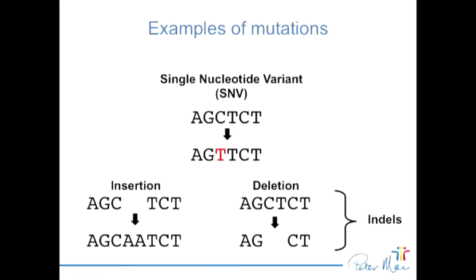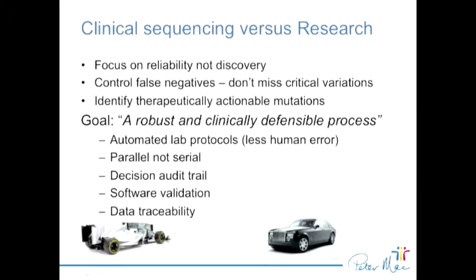One of the things we do as bioinformaticians is normalise the way we describe those variants so that we can compare them with external databases without having to compare all the different combinations we could use to represent them. I work in clinical sequencing, which is quite different to research. The focus is on reliability, not discovery. We're not interested in finding novel genes — we're interested in reliably finding stuff we know about and can actually do something about: actionable mutations.